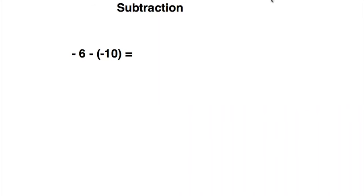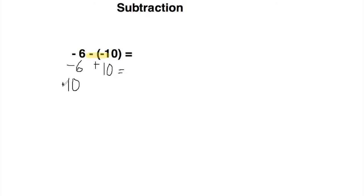For subtraction, it's a bit different because there's no set rule. For subtraction of a negative number, you will usually have two negatives next to each other like this. Two negatives next to each other becomes a positive. So negative six minus negative 10 becomes negative six plus 10. Since it is negative six plus 10 — a negative number plus a positive number — using the commutative property you learned earlier, you switch around the numbers: 10 minus six. And 10 minus six is four, so the answer is four.